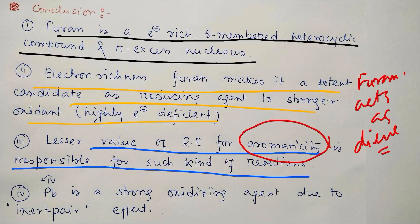And another last important point we have learned is that lead 4+ is a stronger oxidizing agent due to the inert pair effect. That's why it's prone to undergo reduction into lead 2+ salt. So this is the overall discussion for today.